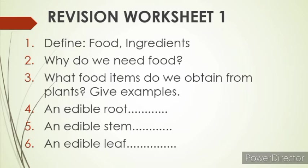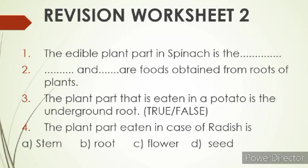The second question is: why do we need food? The third question is: what food items do we obtain from plants? Give examples. You have to give the examples of an edible root — write down the name. An edible stem — write down the name. An edible leaf — you have to write the name here.